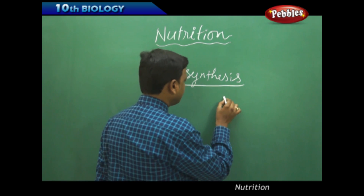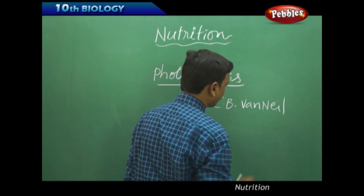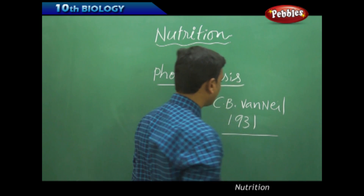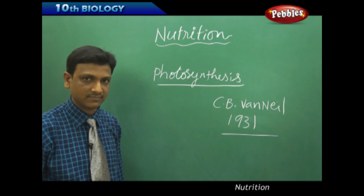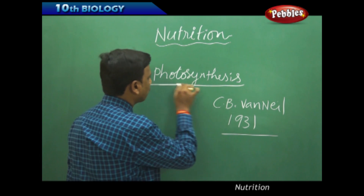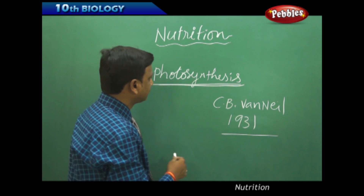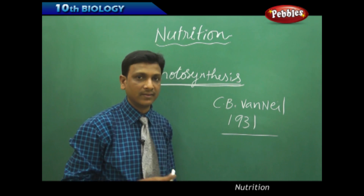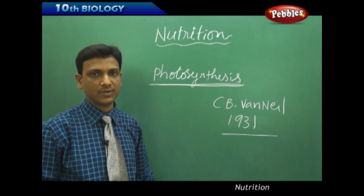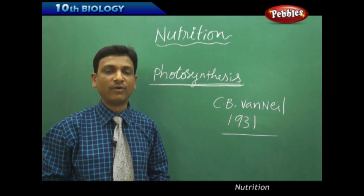Later, it was found by a scientist named C.B. Van Neel. In 1931, he discovered the process by which plants are able to make food and named it photosynthesis. According to photosynthesis, plants are able to convert carbon dioxide and water into carbohydrate, and he expressed this in the form of an equation.